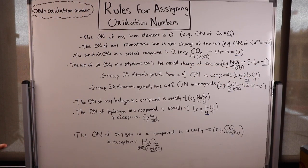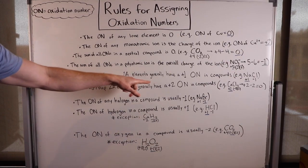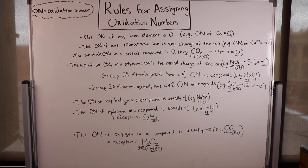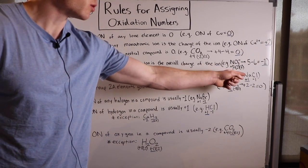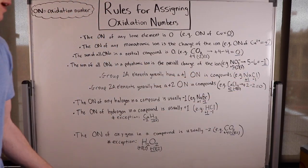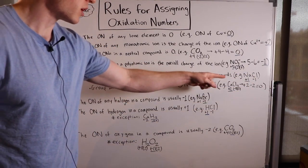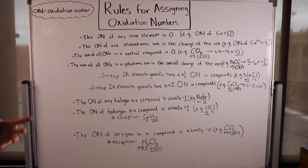Group 1A elements generally have a plus one oxidation number in compounds. An example of a group 1A element in a compound would be sodium in sodium chloride, and here we see it has a plus one oxidation number.